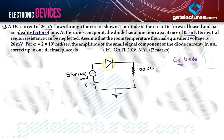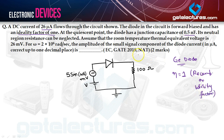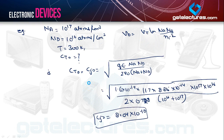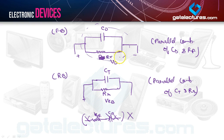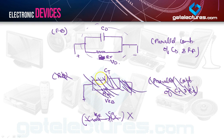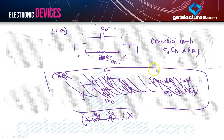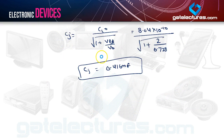From the given data: η = 1 (ideality/recombination factor). The diode equivalent circuit in AC analysis is a parallel combination of the diffusion capacitance CD and the dynamic resistance Rd (= RR). We are given CD = 0.5 nF. There is also a 100 Ω resistance in the circuit. When performing AC analysis, we neglect the DC component and consider only the AC signal: 5 sin(ωt) mV.